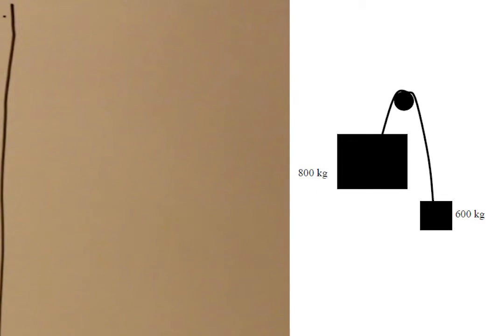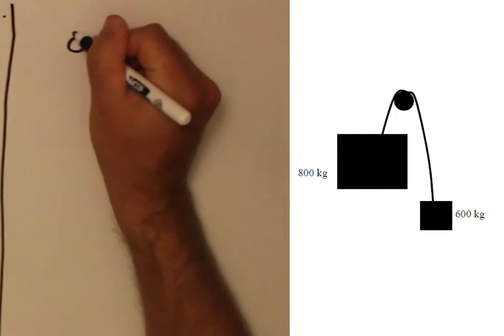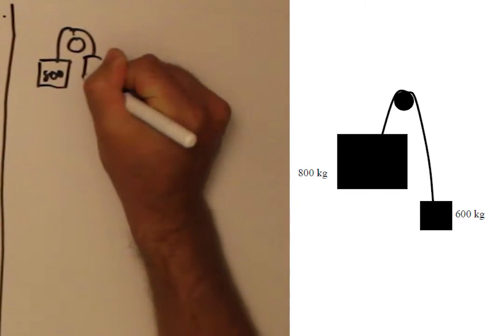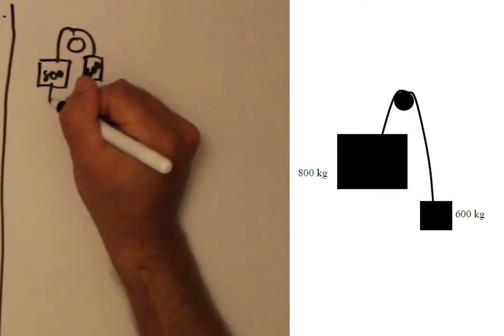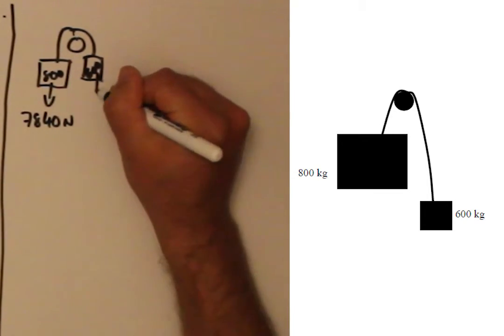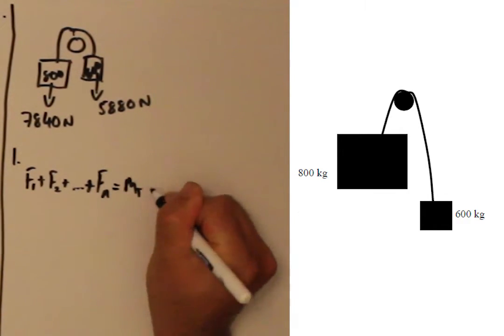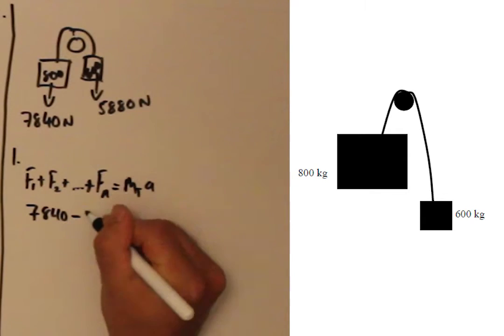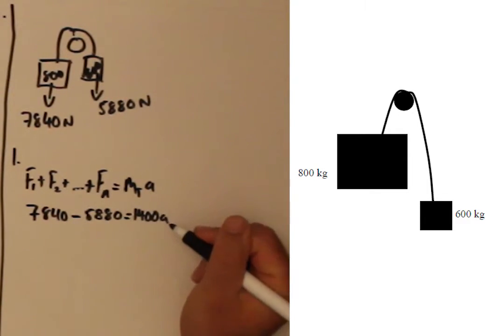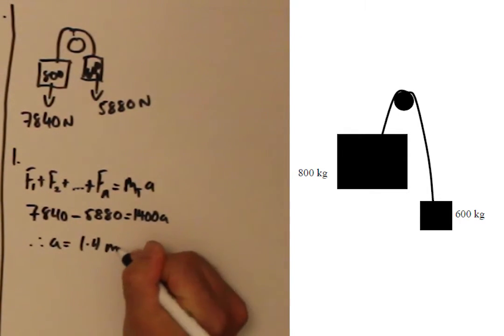In question number five, we have opposing weight forces. Using Newton's second law, we get 7,840 minus 5,880N equals their combined mass of 1400kg times by the acceleration. Therefore, A equals 1.4m per second squared.